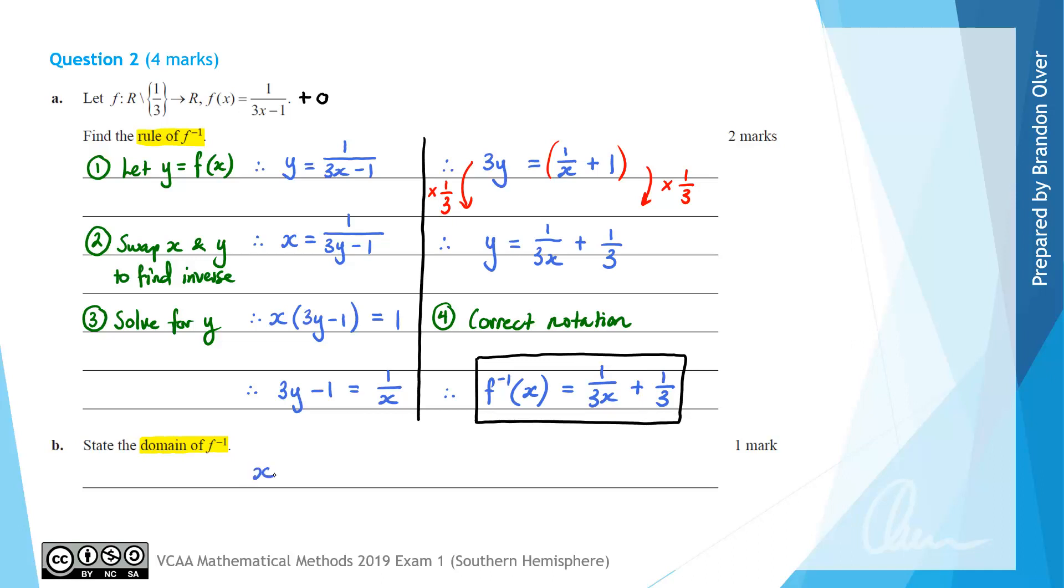We can quote our inverse domain as x as an element of round bracket negative infinity to 0 union 0 to infinity. That is the answer to part b of this question.